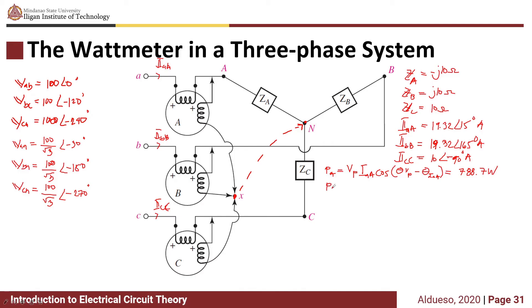Similarly for wattmeter B, the total is VP times IBB times cosine of the angle for VBN minus the angle of IBB, which equals 288.7 watts. Remember, the angle here is the angle of the measured voltage minus the angle of the measured current.